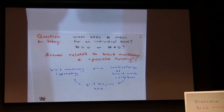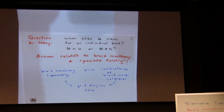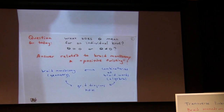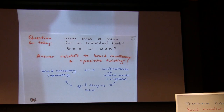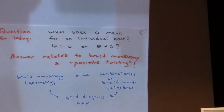I'd like to address a different question: what kind of information does theta see for an individual knot? How do you determine if theta is zero or non-zero? It turns out the answer is related to braid monodromy. My theorem, I think, goes in the right direction — right-veering implies non-vanishing. For bigger braids, if the braid has enough positive twisting — more positive twisting than a full positive twist — then the theta invariant is non-zero.